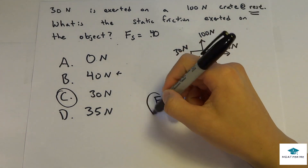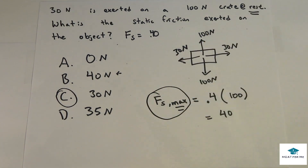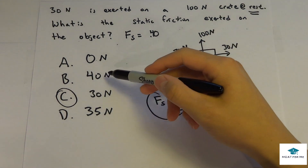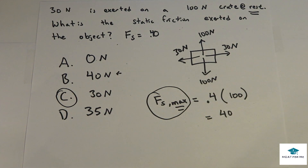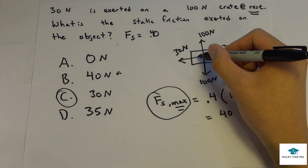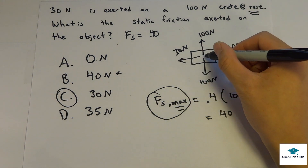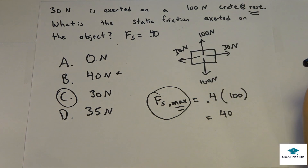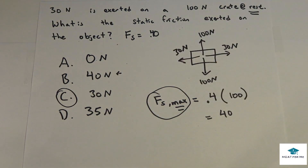This is where the maximum concept is key. The MCAT loves to trick you with this — they'll always put the maximum value as an answer choice, but generally that won't be the case. The static friction just has to oppose whatever force is applied in the opposite direction, so here it's 30 newtons.